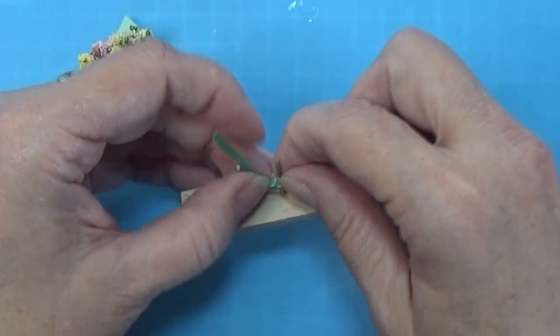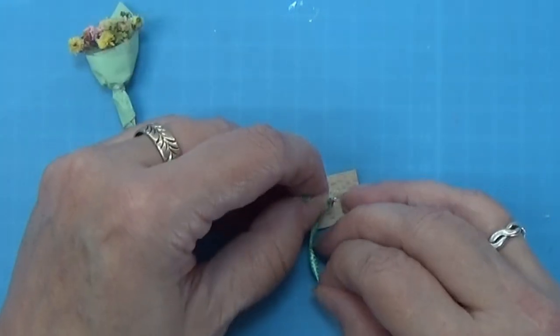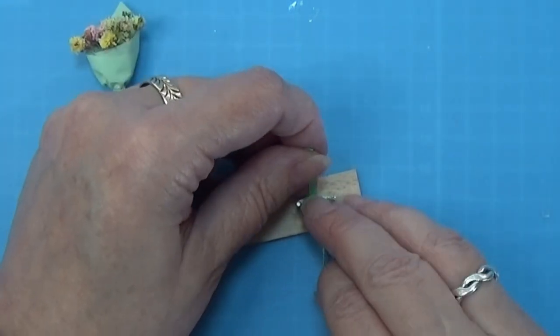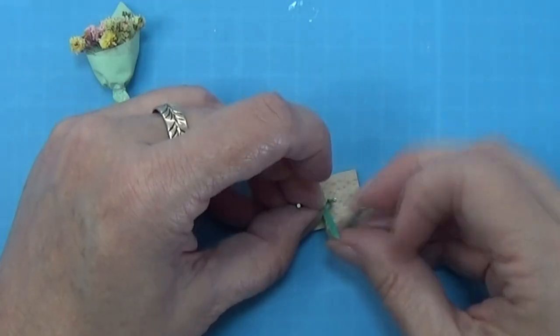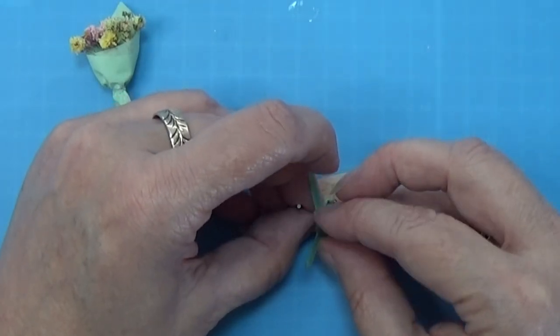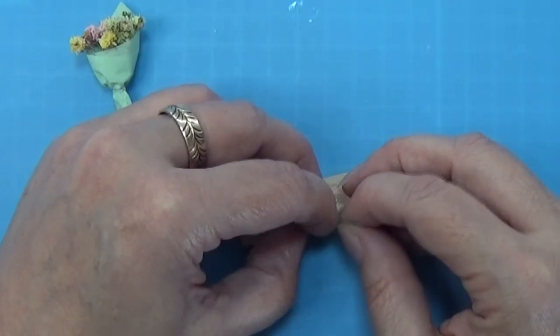I'm taking the little piece up and over the ribbon, and then I'm just bringing the other piece of the ribbon back, and I am going to tie a little knot here.